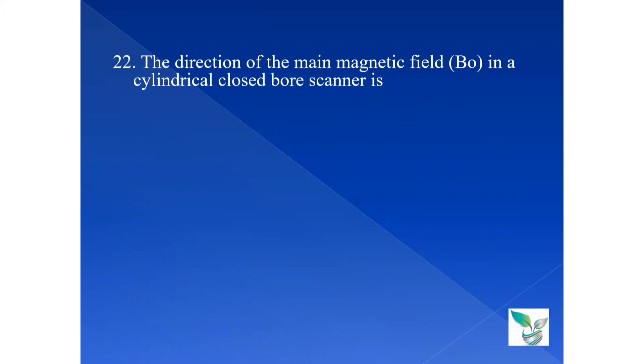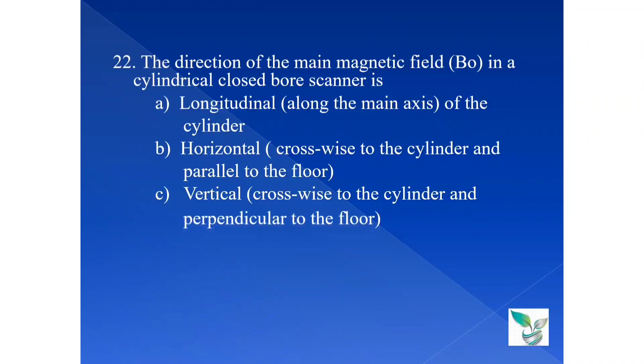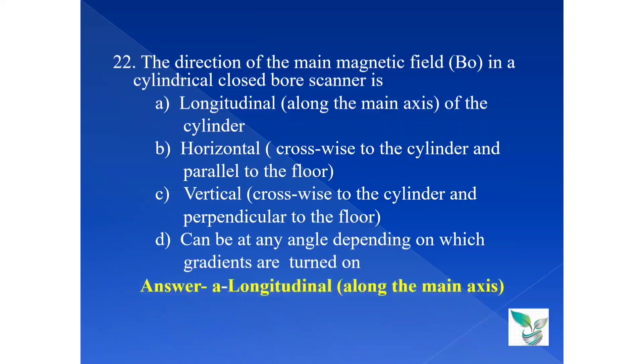Moving on to the next question, question number 22. The direction of the main magnetic field that is B0 in a cylindrical closed bore scanner is option A longitudinal along the main axis of the cylinder, option B horizontal crosswise to the cylinder and parallel to the floor, option C vertical that is crosswise to the cylinder and perpendicular to the floor, and option D can be at any angle depending on the gradients are turned on. The answer is option A that is longitudinal along the main axis of the cylinder. So the direction of the main magnetic field B0 in a closed cylindrical bore scanner is longitudinal along the main axis of the cylinder.